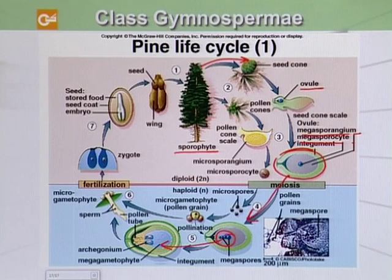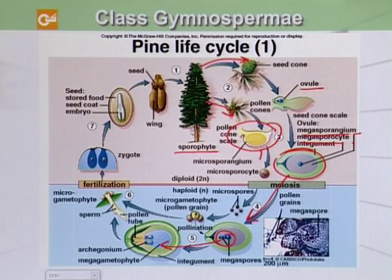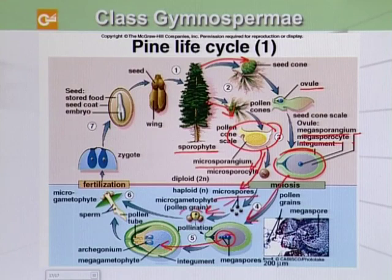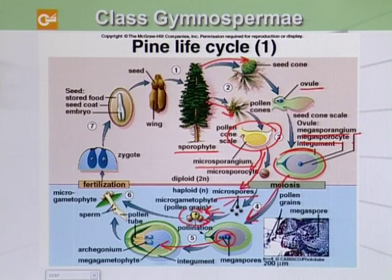Likewise, the diagram also shows the microsporangium cycle. Here we have a pollen cone scale, and inside it the microsporangium is present. Through the process of meiosis, microspores are produced and they form pollen grains. The pollen grains are winged and are dispersed by wind pollination — they do not need water for their dispersal. Wind pollination is an important adaptation to the land environment.